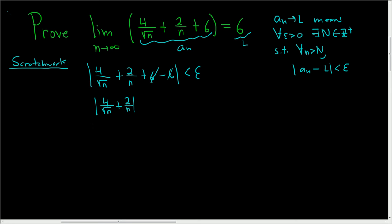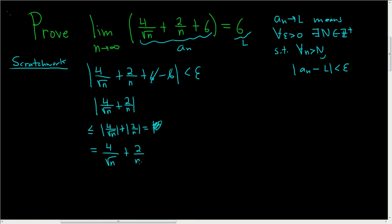Via the triangle inequality, we'll make this less than or equal to the absolute value of 4 over the square root of n plus the absolute value of 2 over n. Everything here is nice and positive, so we can drop the absolute values. So this is equal to 4 over the square root of n plus 2 over n.